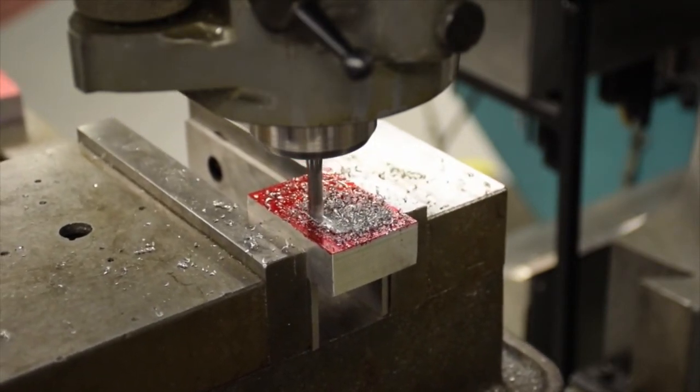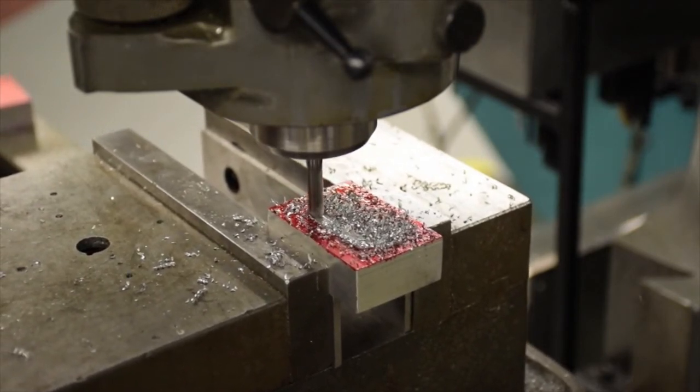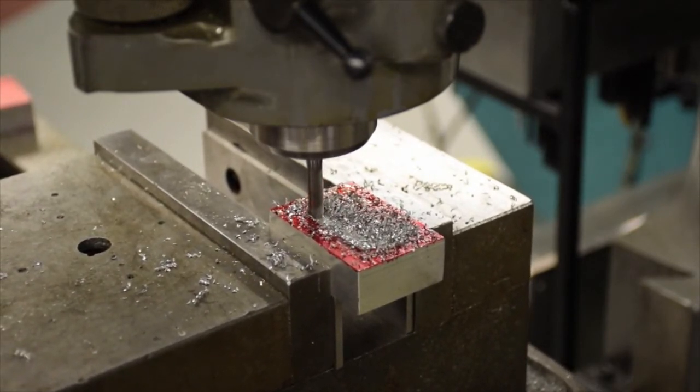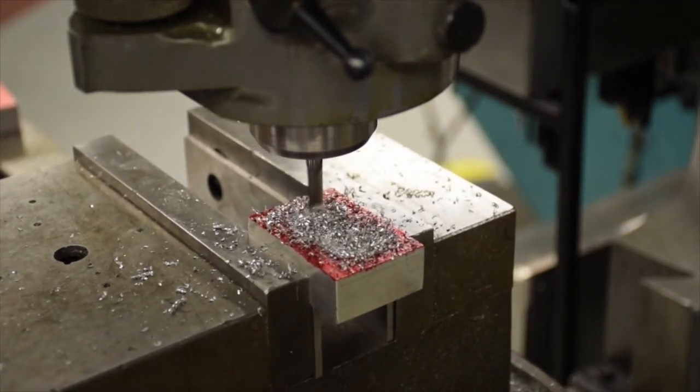When milling out a pocket, do the outside walls then come in and take out the excess in the middle. The right hand rule is very useful for getting a good looking pocket. Make sure to use oil and clean out the metal shavings when they get in the way.